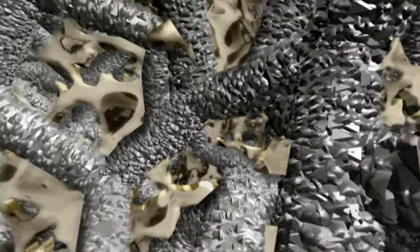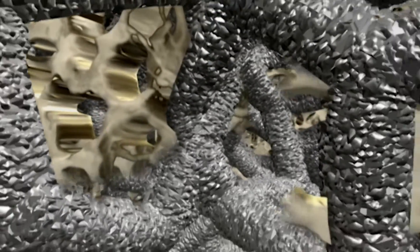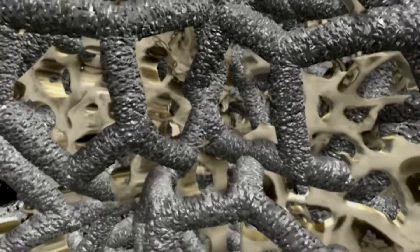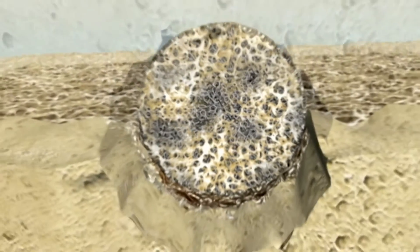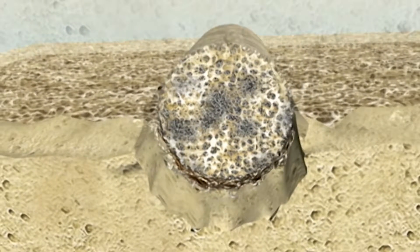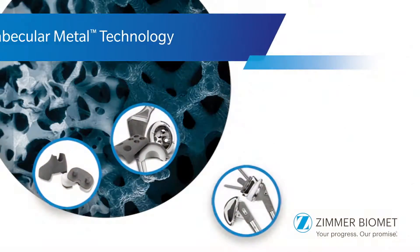Animal studies using trabecular metal cylinders have shown that the material yields more extensive and rapid bone ingrowth compared to other tested porous materials. It has also been shown that trabecular metal material leads to improved gap filling by bone and excellent implant stability.